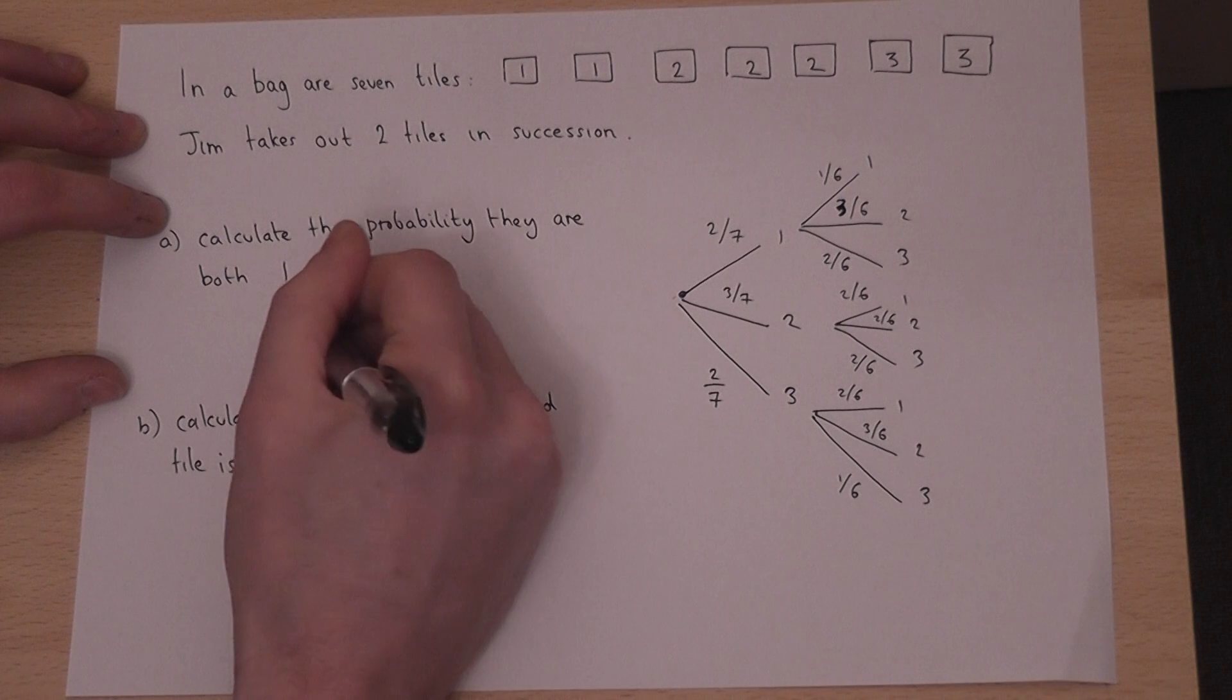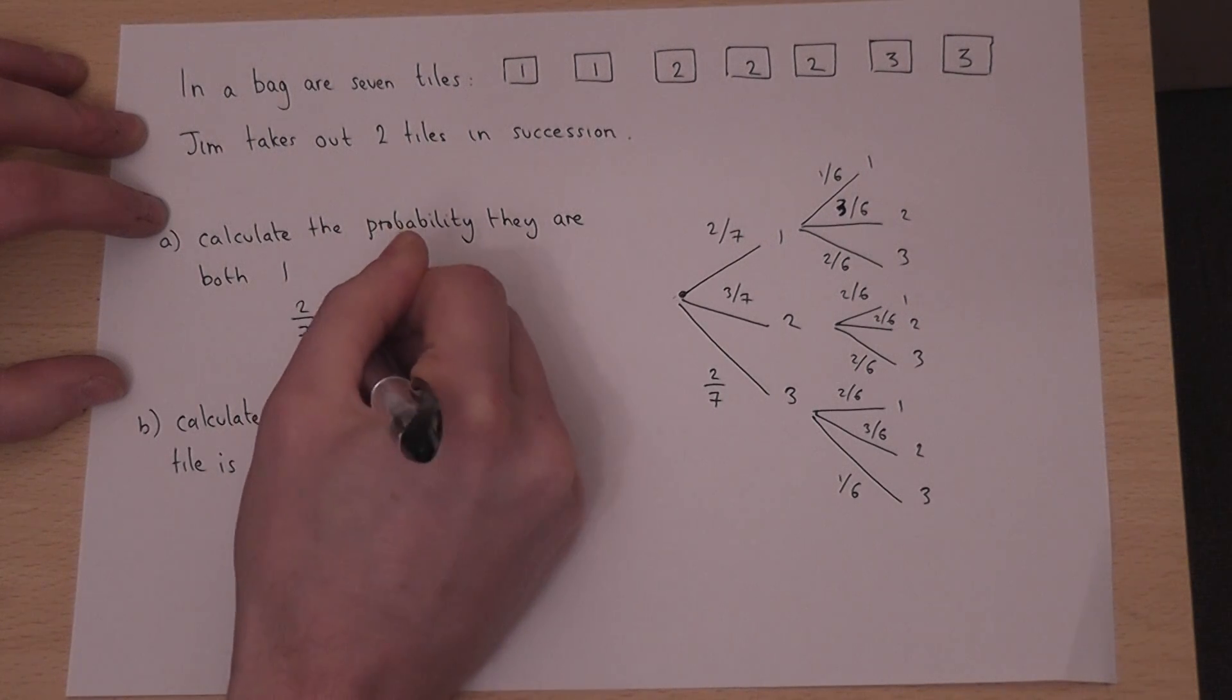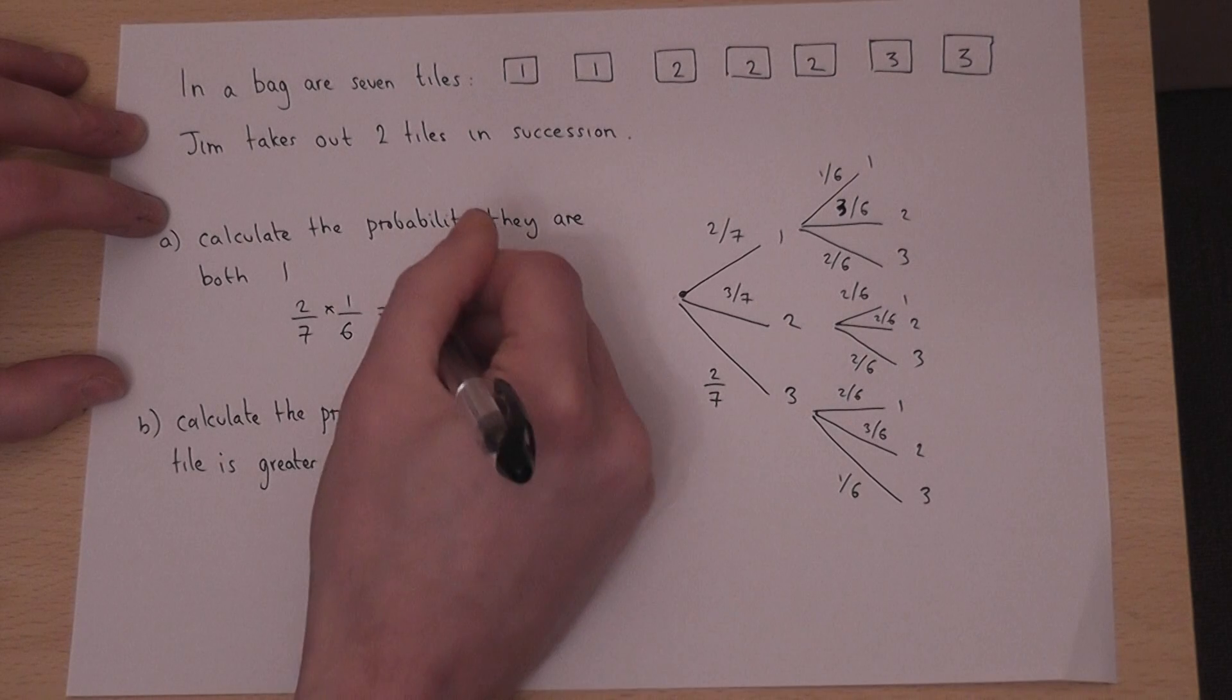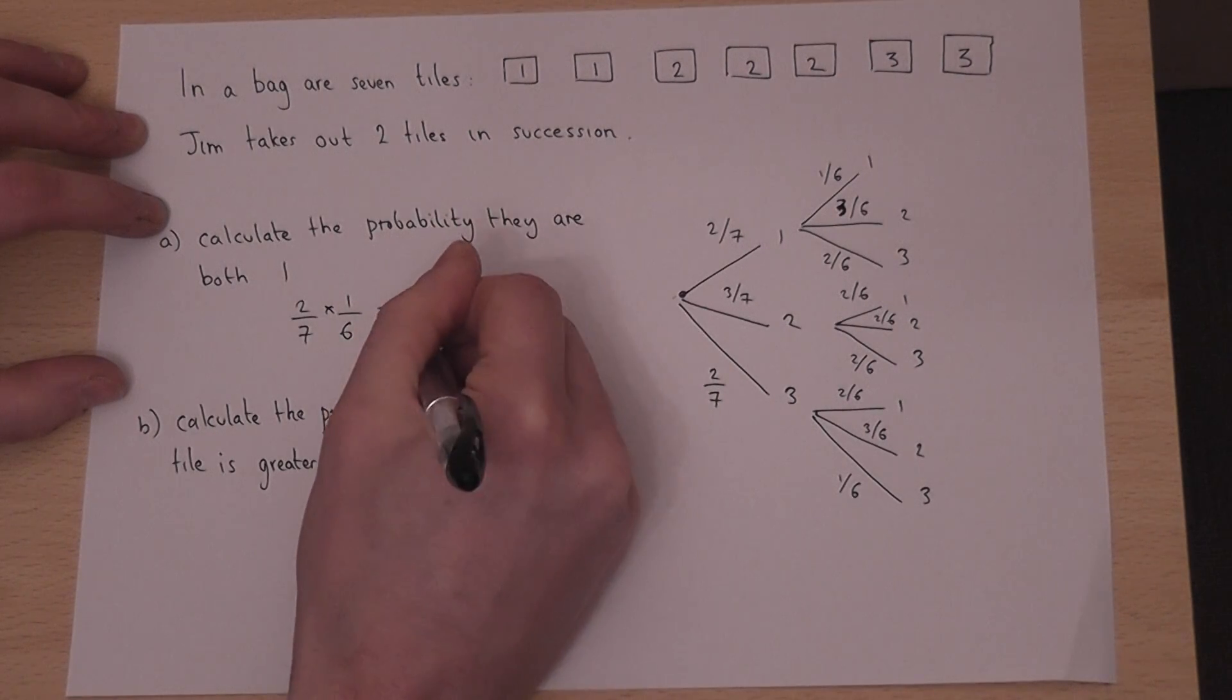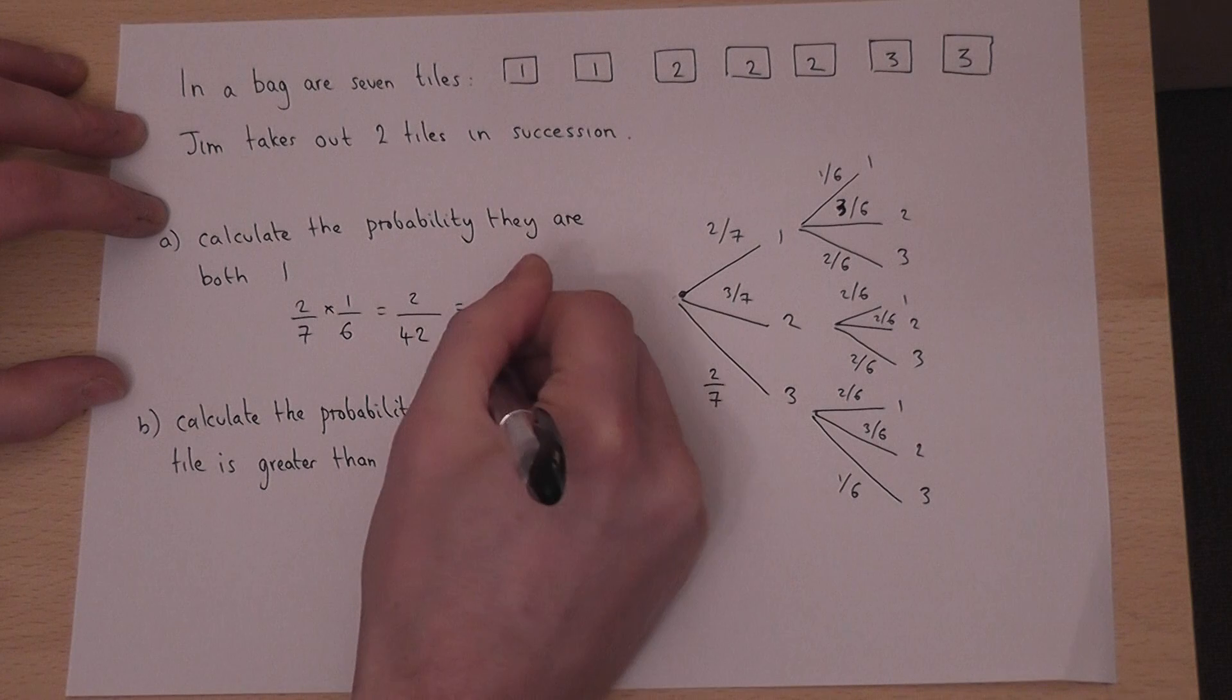So we do two-sevenths times by one-sixth. Two times one is two over forty-two, which is also one over twenty-one.